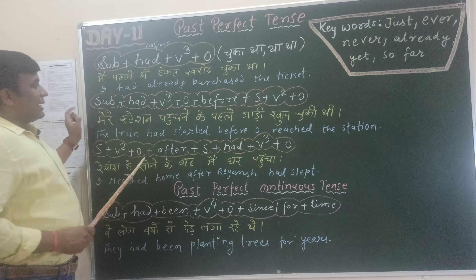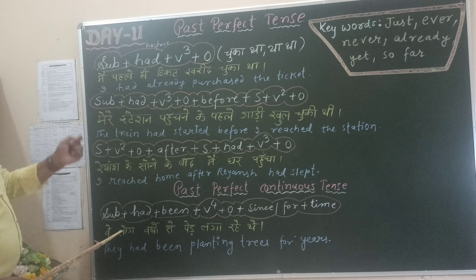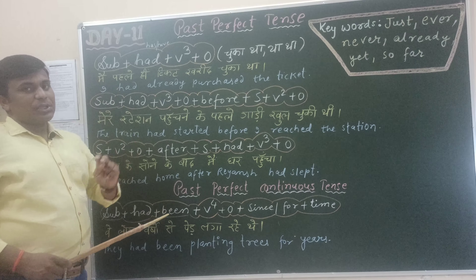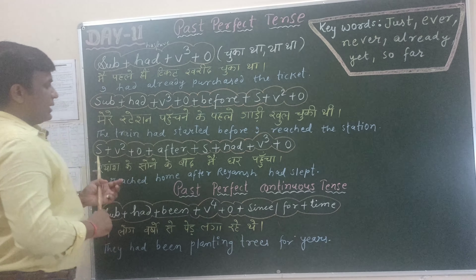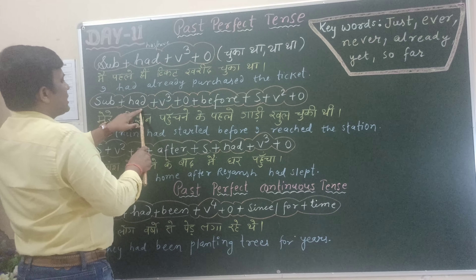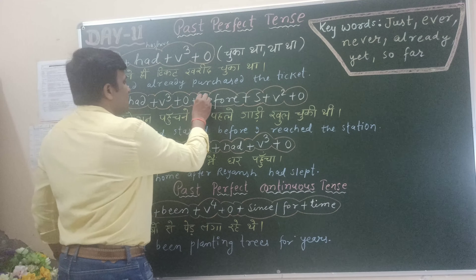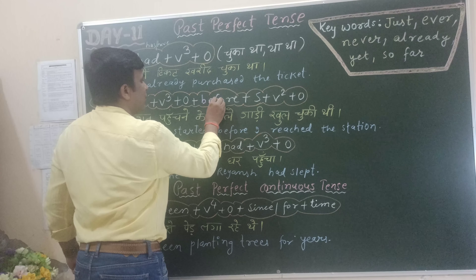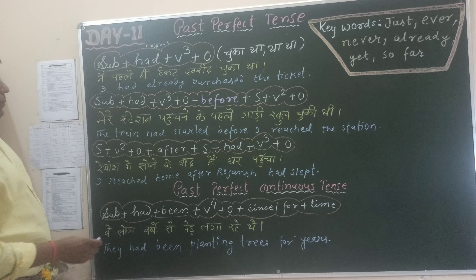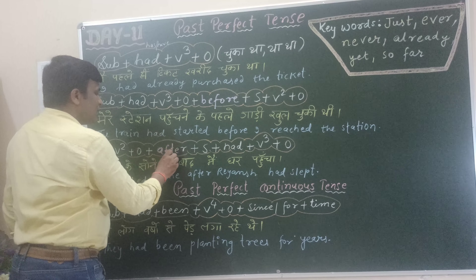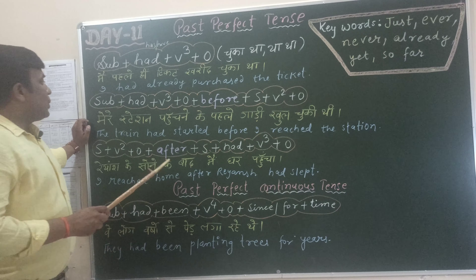Past perfect tense also has two additional cases — connecting sentences with before and after. When two past actions happen together, we connect them. Generally, the first part uses past perfect (subject + had + V3 + object) and the second part uses past indefinite. When using after, the first part becomes past indefinite and the second part becomes past perfect.